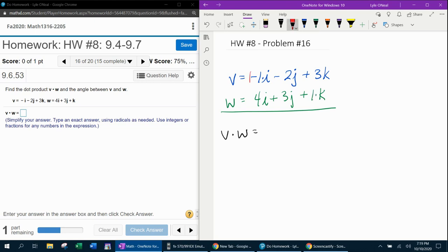To find the dot product, we're going to multiply the A's together. 4 times negative 1 is negative 4. We're going to multiply the B's together, negative 6. And we're going to multiply the C's together, plus 3.